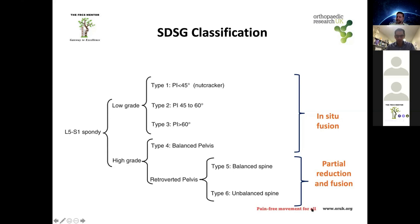For high-grade spondylolisthesis, you must determine whether the spine and pelvis are balanced. If balanced, an in-situ fusion can be performed. If the pelvis is compensating with retroversion for an imbalanced spine, a partial reduction and fusion should be considered. Complete reduction carries higher risk — the nerve is accustomed to its position, and over-reduction could cause permanent neurological injury and foot drop.